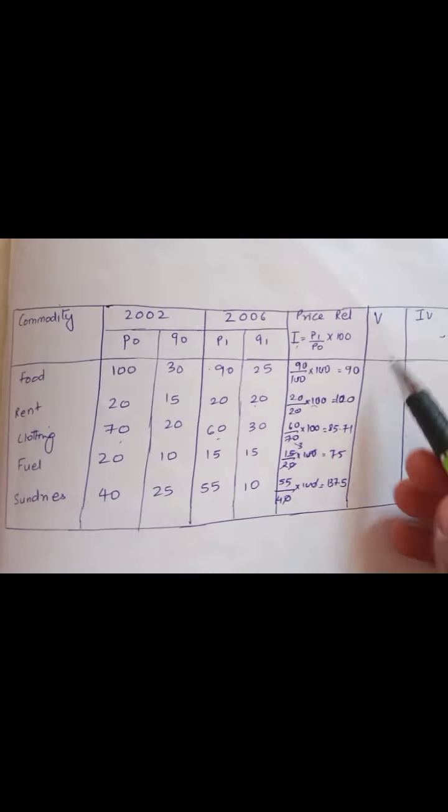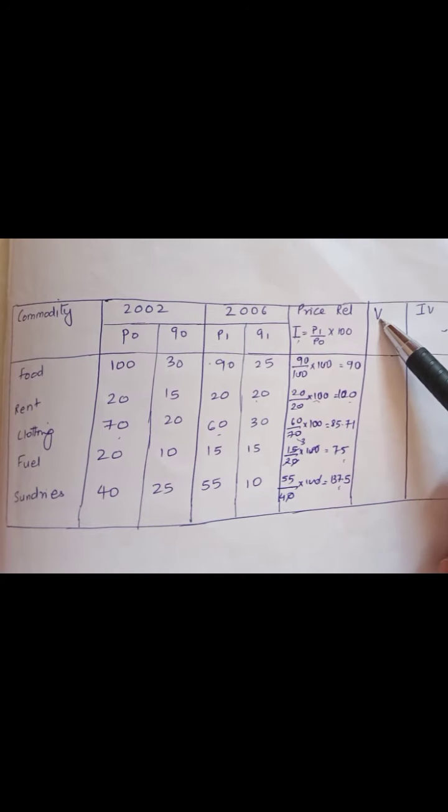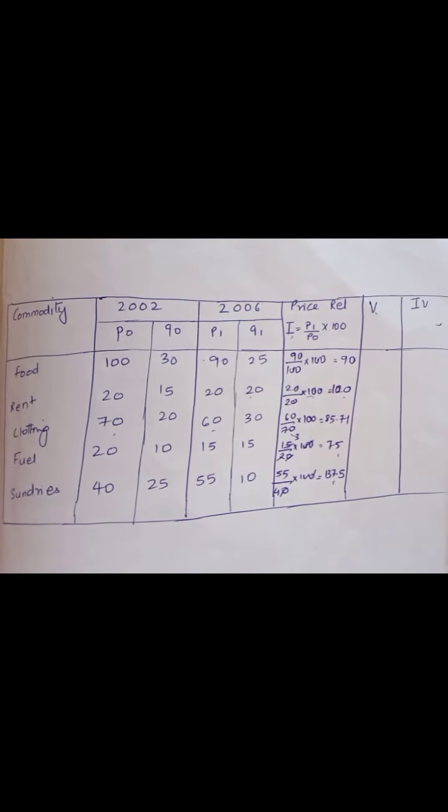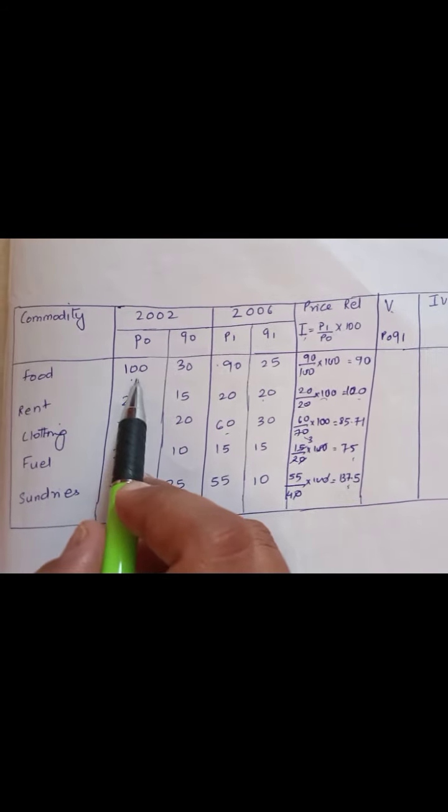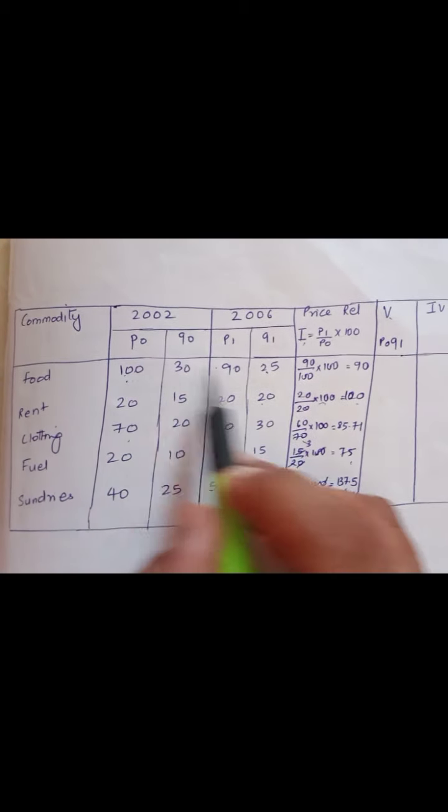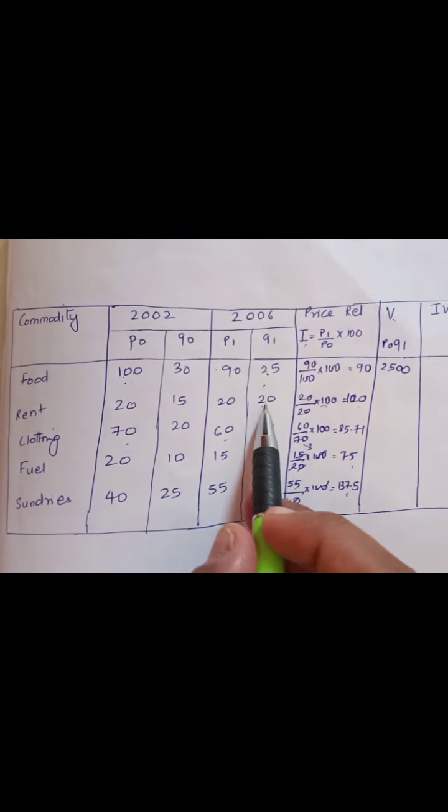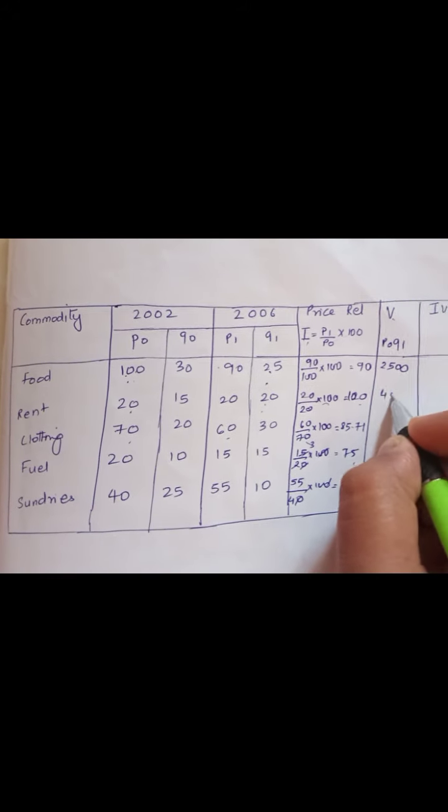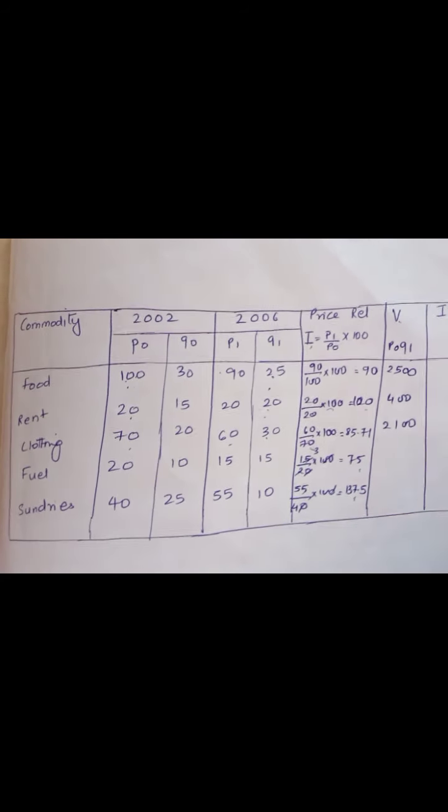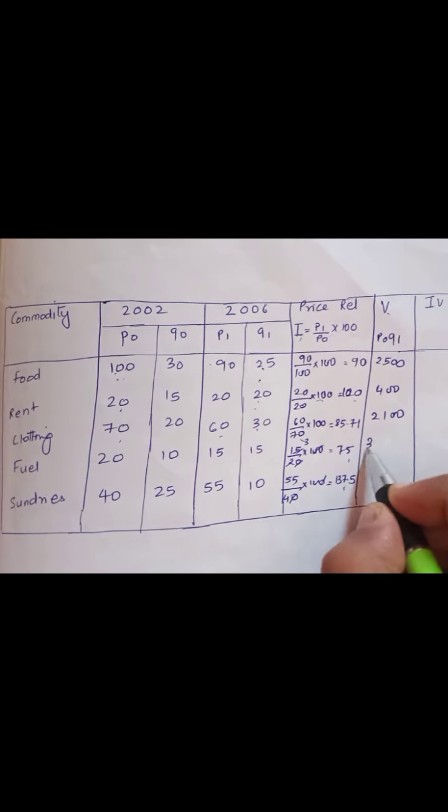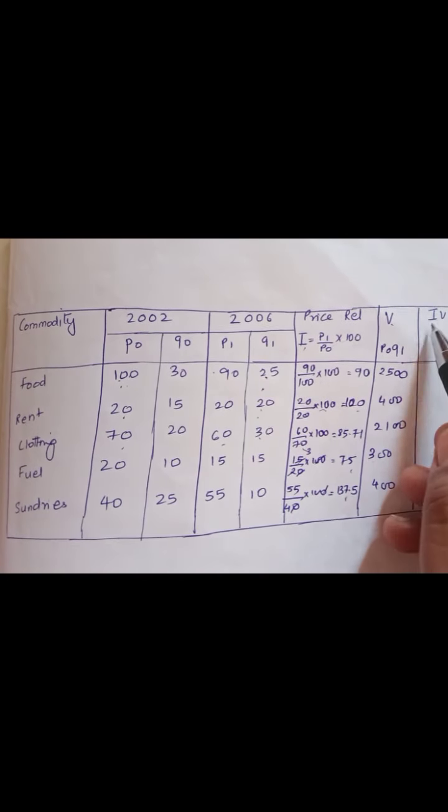So this whatever we have got is i, this is your price relative. Now we need to find V. As in the question we already have given, P0Q1 has to be your weights. So what is P0? 100 into Q1 is 25, so 100 into 25, we get 2500. Similarly, P0 is 20 into Q1 20, that's 400. 70 into 30 is 2100. 20 into 15 is 300. And 40 into 10 is 400 here in the last row.